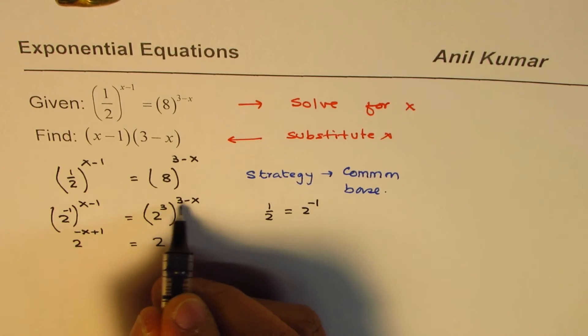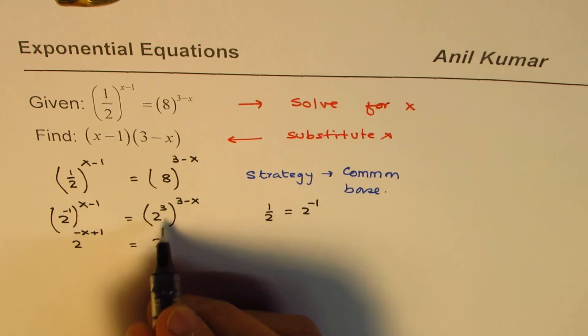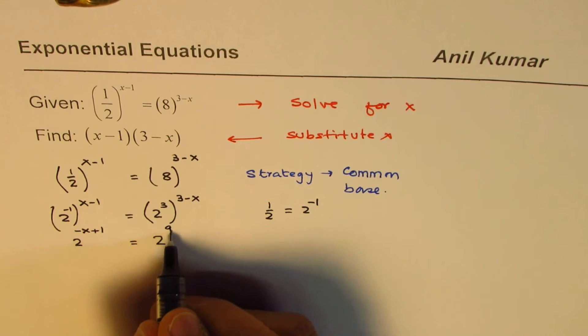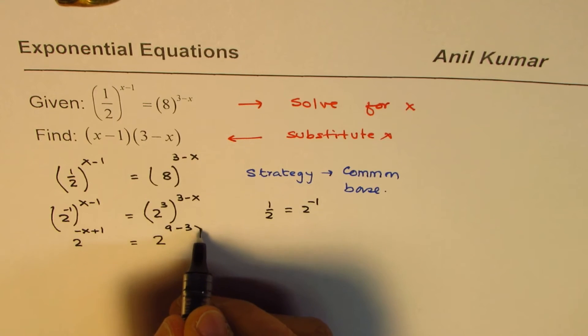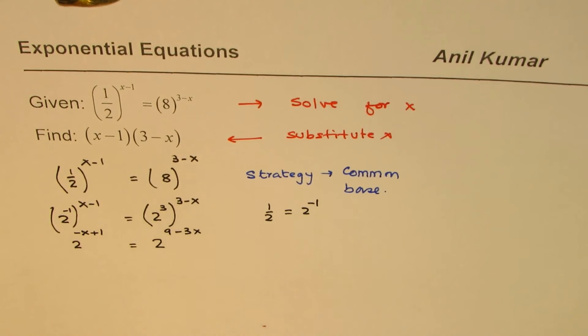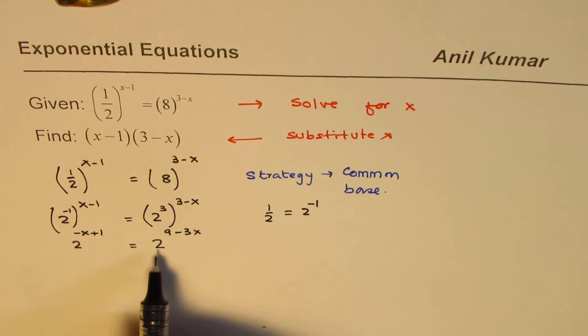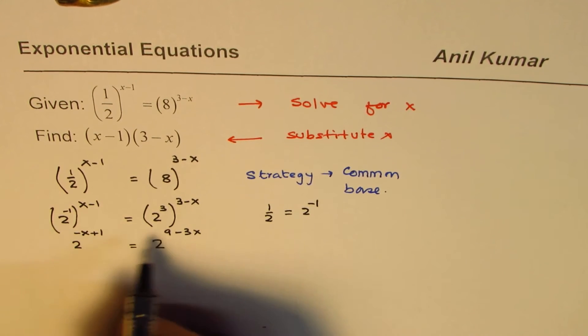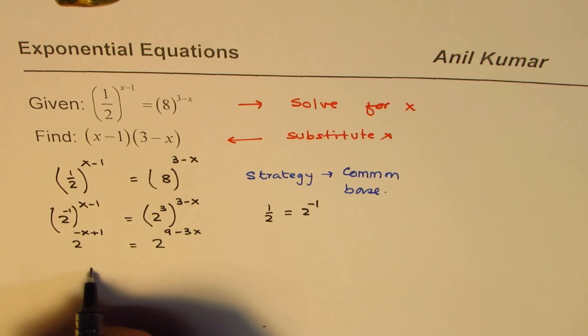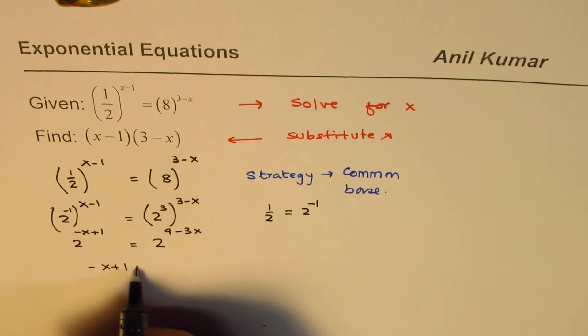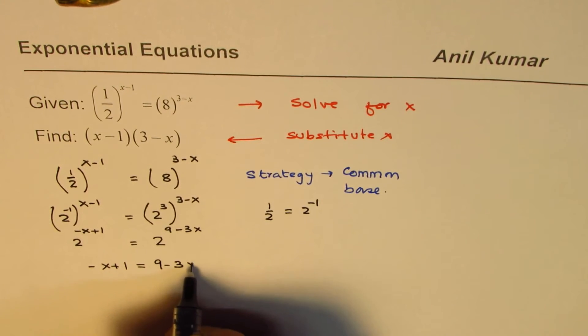multiply this by 3, right? So it's 3 times 3 is 9 minus 3x. Is that okay? So it's the power rule which is applied. Now we have common base which is 2, their exponents should be same. So from here we can say -x+1 should be equal to 9-3x.